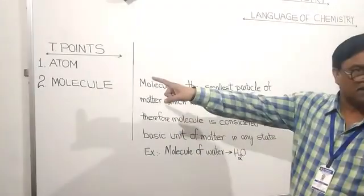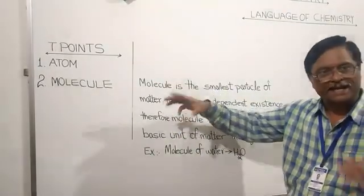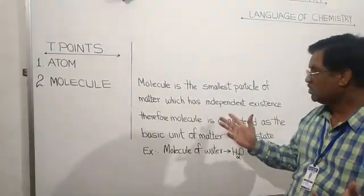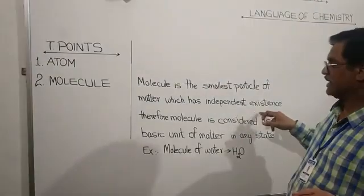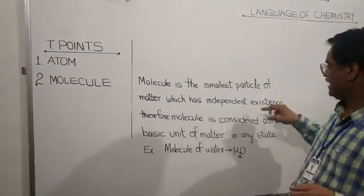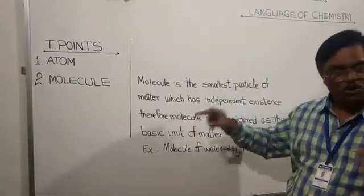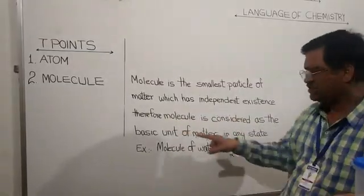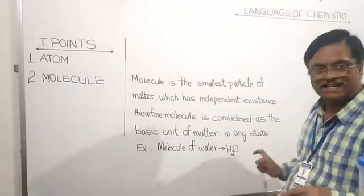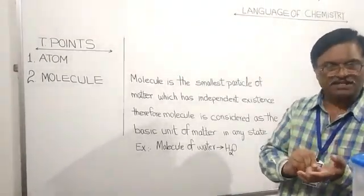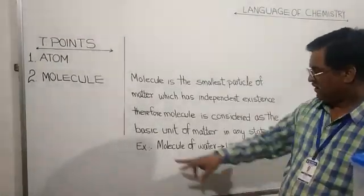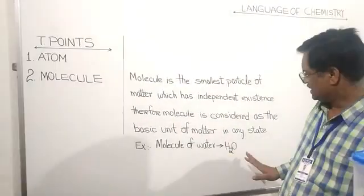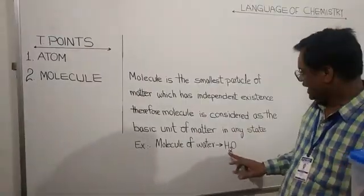We have already discussed that the atom is the smallest particle of matter, but it may or may not exist independently. However, a molecule 100% exists independently — it has independent existence. Due to this reason, the molecule is considered as the basic unit of matter in any state: solid state, liquid state, and gas state. An example of a molecule is water, which is represented chemically by the formula H2O.